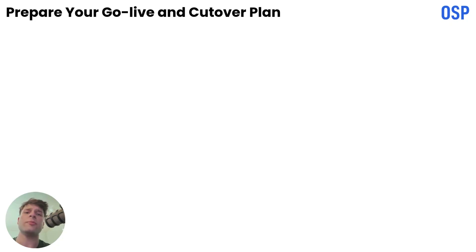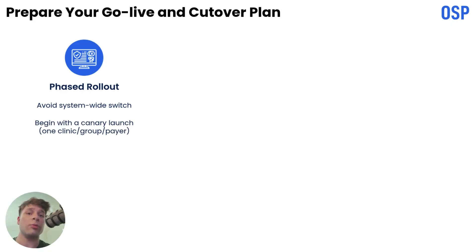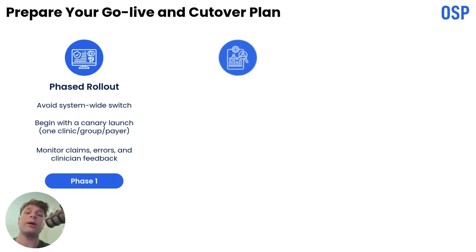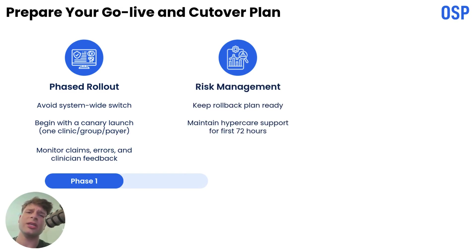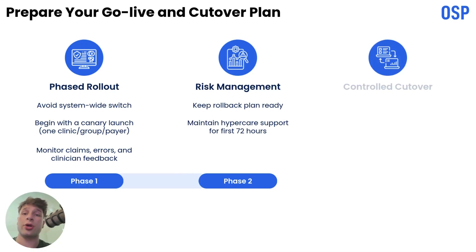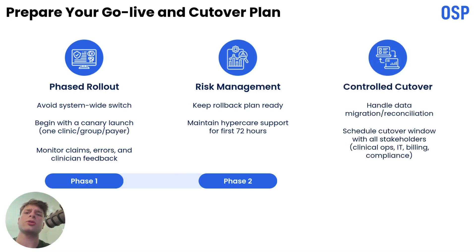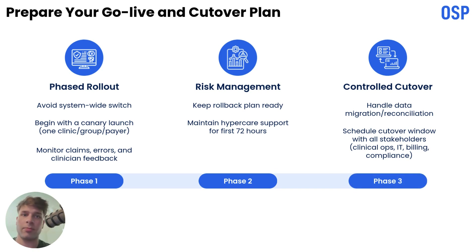When you're ready to go live, don't flip a switch across the entire health system — use a phased rollout. Start with a canary launch: one clinic, one provider group, or one payer. Monitor claim acceptance, error rates, and clinician feedback closely. Keep a rollback plan ready and a hyper-care team on standby for at least the first 72 hours. If your integration requires data migration or a final reconciliation, schedule a controlled cutover window with all stakeholders — clinical ops, IT, billing, and compliance — all on the call.